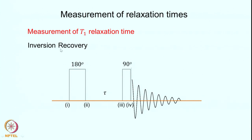We now switch to a different topic: measurement of relaxation times. We discussed relaxation times earlier and showed the importance of T1 and T2 in determining the evolution and recovery of magnetization along the Z axis and the decay of magnetization in the transverse plane. We must know how to measure T1 and T2 for a given spin system. The most common technique for measurement of T1 is the so-called inversion recovery experiment.